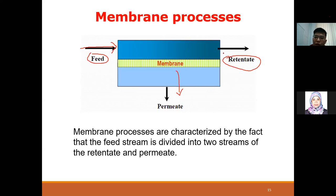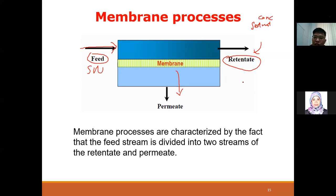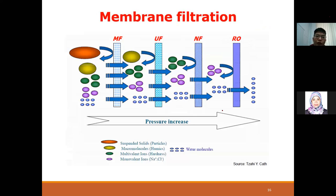The retentate - the other outlet - for example in an RO membrane treating sea water, the retentate contains concentrated sea water because you have already removed a lot of water. We also call the retentate 'reject' or 'brine' - RO brine. All these terms refer to the same thing, just depending on what type of membrane system you're using.